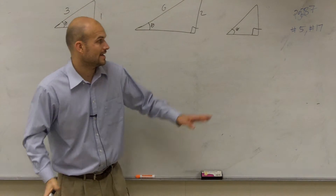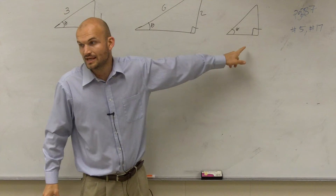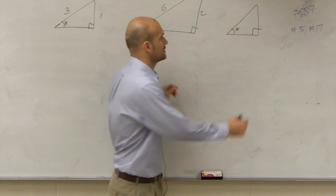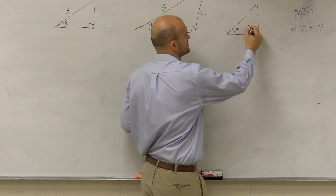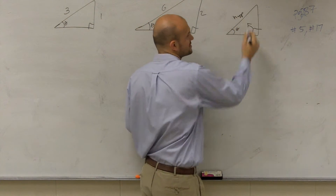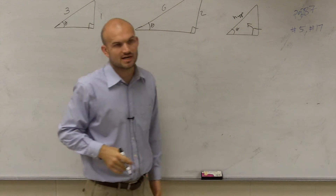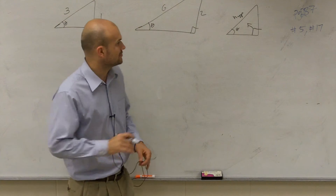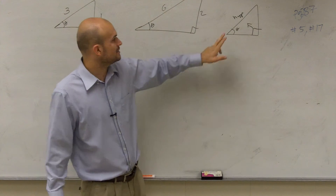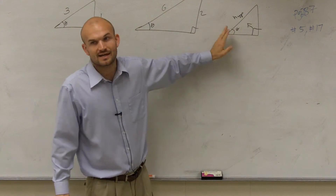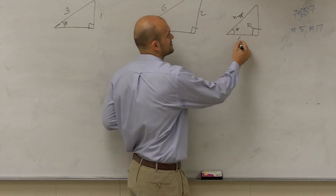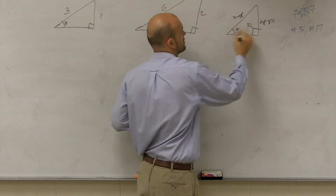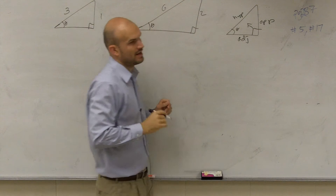For any triangle you're looking at, you need to make sure you identify what the angle is and where the right angle is. Once you have the right angle, the easiest part is to always find the hypotenuse because it's directly across from your right angle. Then, to find the adjacent side, your adjacent side connects your angle with your hypotenuse, and your opposite is going to be directly across from your angle.